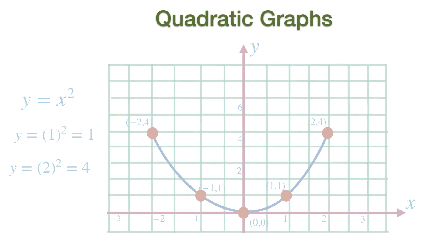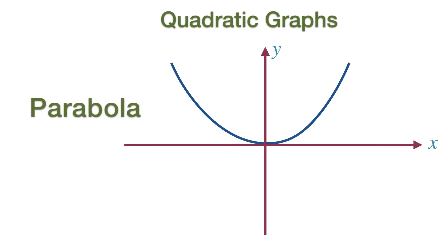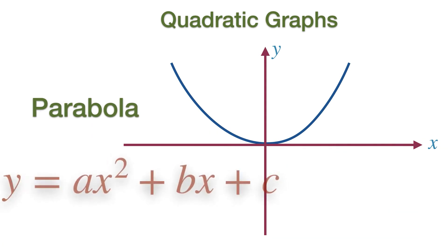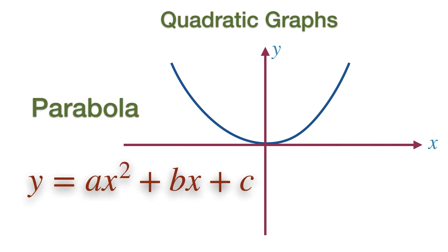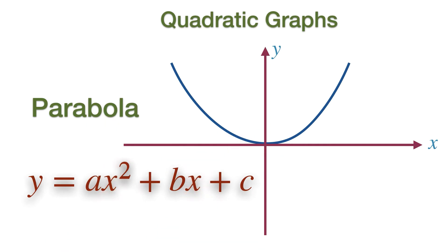The graph of a quadratic function is always a smooth curve called the parabola. The general equation of a quadratic function is of the form Y equal to AX squared plus BX plus C, where B and C are any constant, but A is a non-zero constant, and X is the variable of the function.